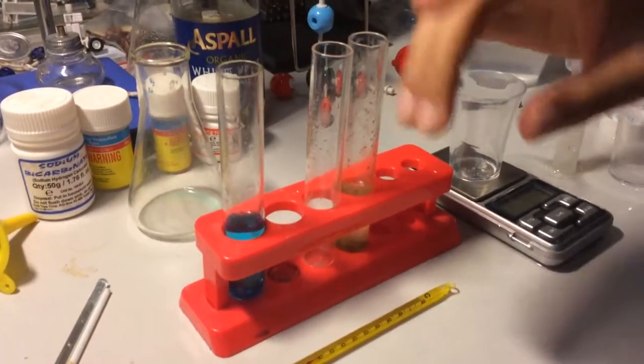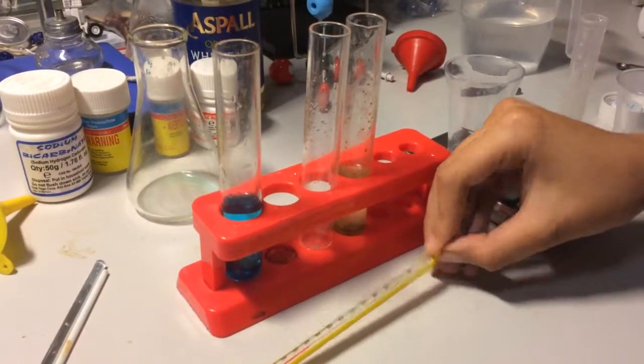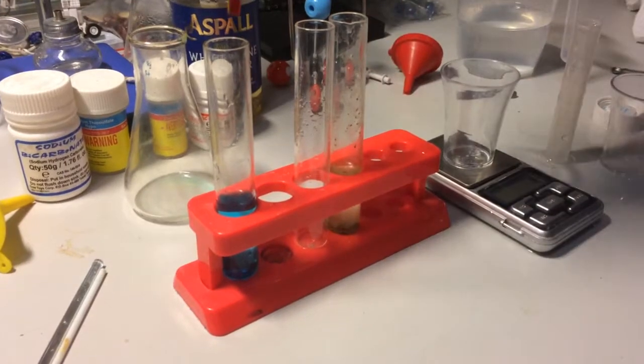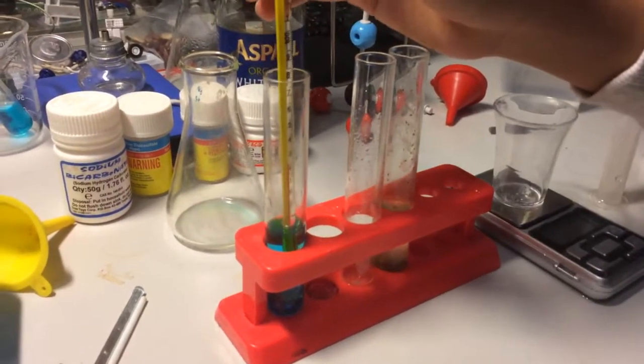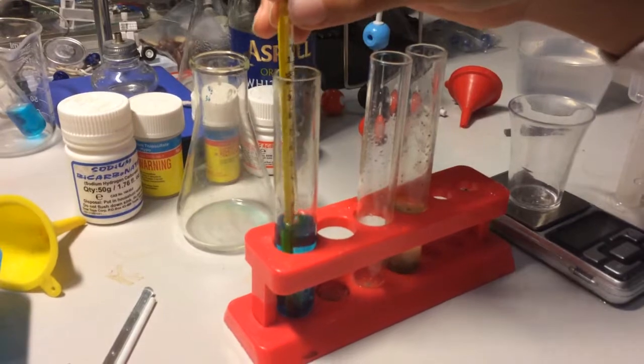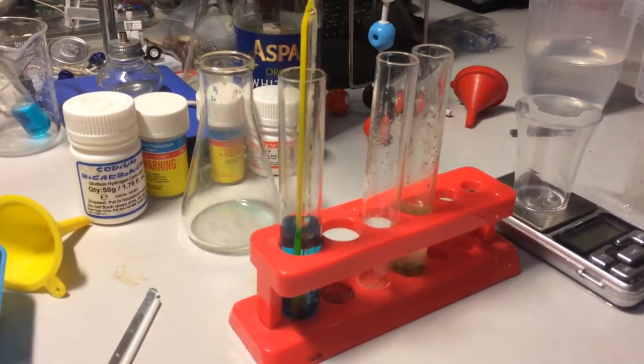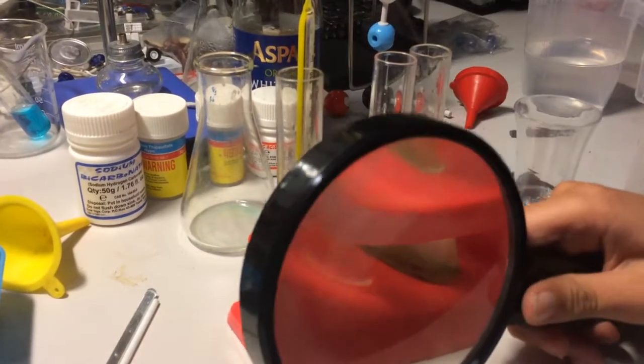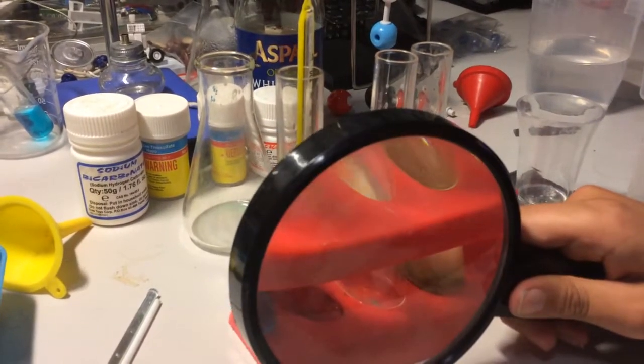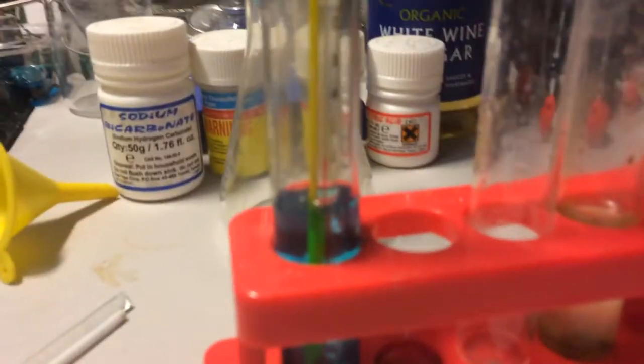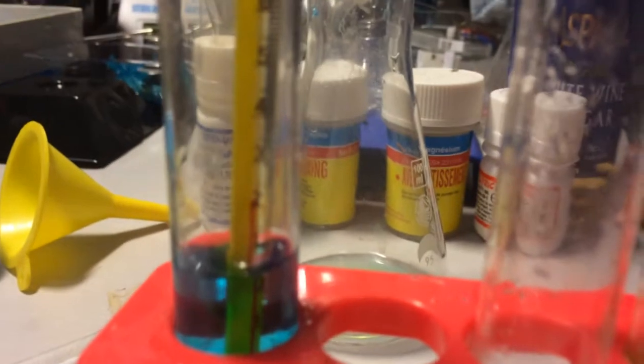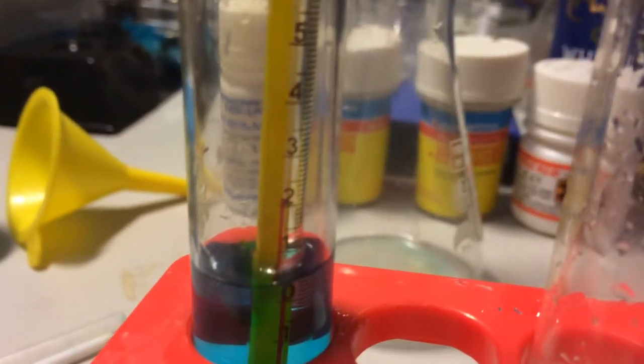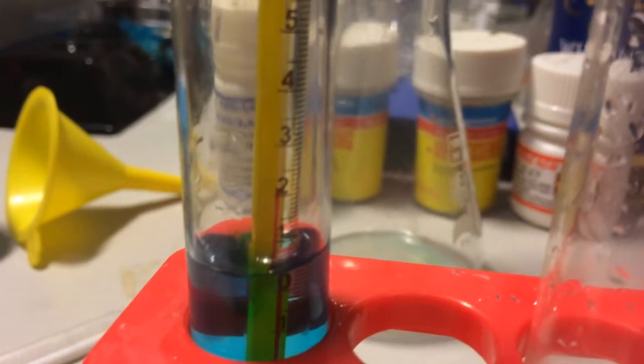Before we add the iron, we will need to measure its temperature before and after the reaction to see if it is an endothermic or exothermic reaction. As you can see, the temperature here is around 21 degrees. If after the reaction it goes up, it is an exothermic reaction. But if the temperature goes down after the reaction, it is an endothermic reaction.